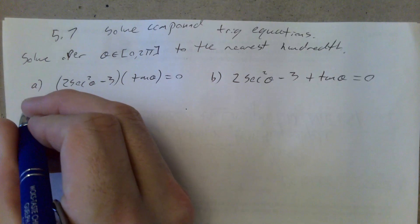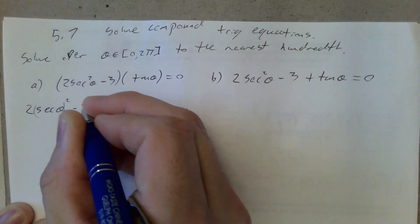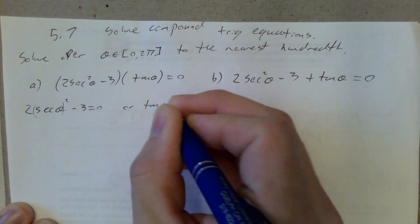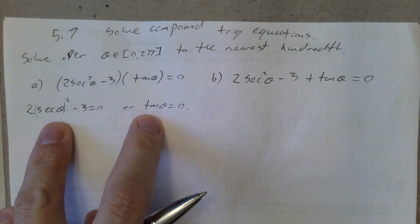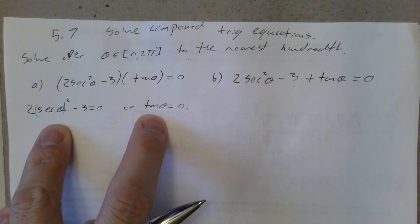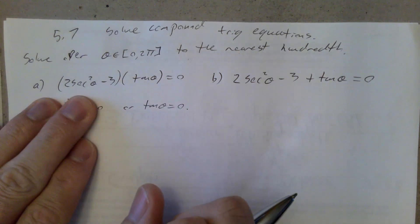So we split this up, and we say either 2 times the secant of theta squared minus 3 is equal to 0, or the tangent of theta is equal to 0. And now the fact that we have two different trig ratios does not concern us at all, because they are separated into two separate equations.